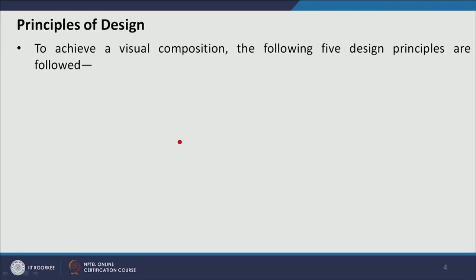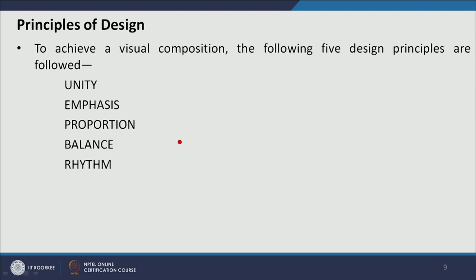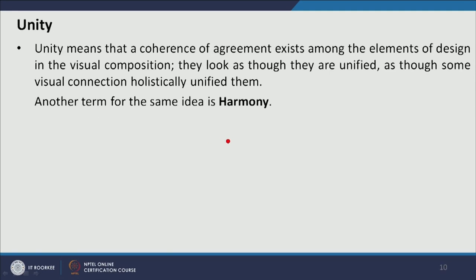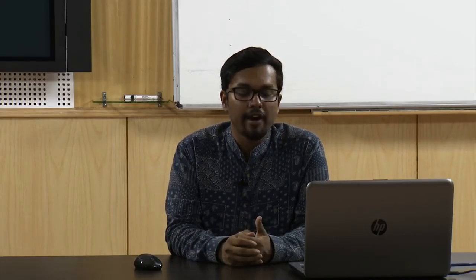To achieve a visual composition there are the following visual design principles: unity, emphasis, proportion, balance, and rhythm. First we discuss about unity. Unity means that there is a coherence of arrangement which exists among the elements of design in the visual composition.